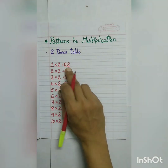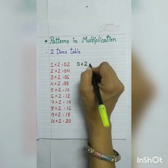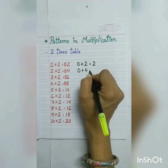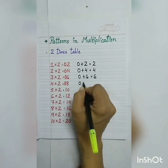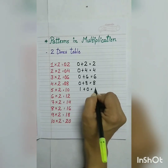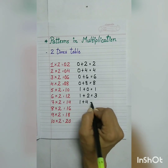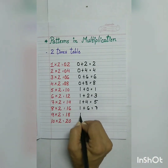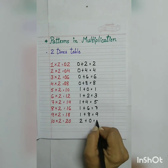Now let us add the two digits of each product. Zero plus two equals two. Zero plus four equals four. Zero plus six equals six. Zero plus eight equals eight. One plus zero equals one. One plus two equals three. One plus four equals five. One plus six equals seven. One plus eight equals nine. Two plus zero equals two.